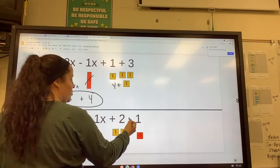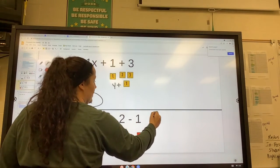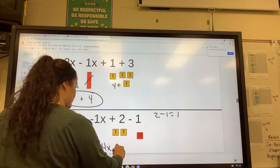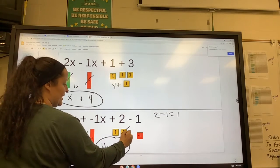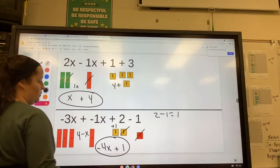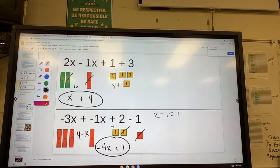And then it's plus 2 minus 1. If you realize 2 minus 1 equals 1, that's great. You can put plus 1, and that would be your answer. Or you can cancel out 1 and negative 1 until you're left with plus 1. So it's negative 4x plus 1.